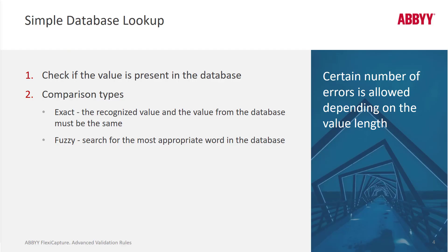For database checks, we can either do exact or fuzzy matches with data in a database. We can merely check if the value is present in the database. If it is, great. If it isn't, it's marked as a rule violation. And if it's a fuzzy match, that can be very handy if you've got, say, a company — Pacific Mobile Corp — and there's some ink spilled on the document and it's read as Pacific Mobile Co. We can still match that with a fuzzy match.